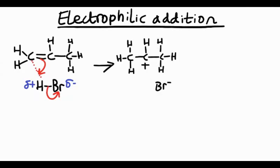That bromide ion that was formed is going to be attracted to the positive carbon atom, forming a bond to it, meaning that our product is going to be 2-bromopropane.